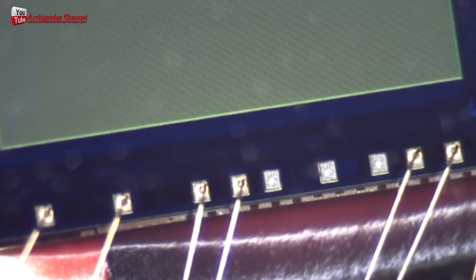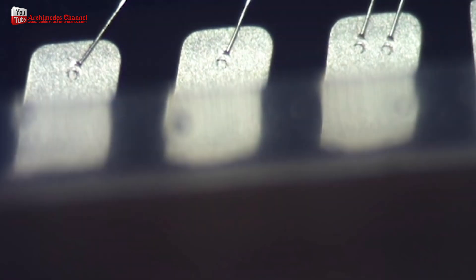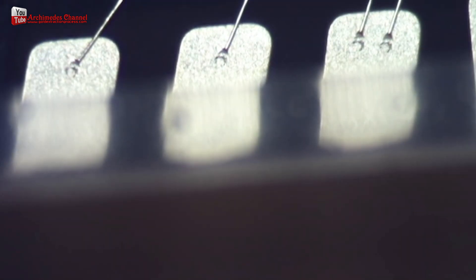To recover the gold wire from electronic parts, you will need to disassemble the parts and extract the gold wire. This can be done manually with tools such as tweezers and soldering iron or with specialized equipment like a wire stripping machine.